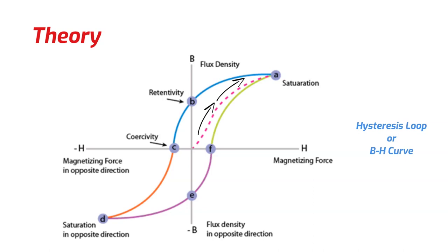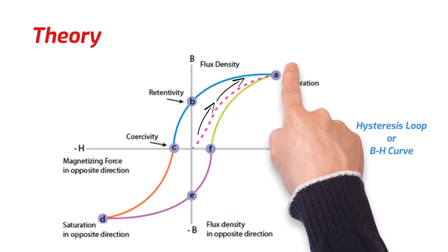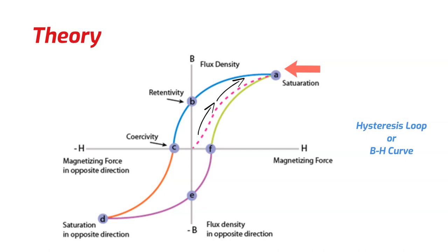Eventually, all the domains will get aligned with the increment in the applied magnetic field. And it will come to a saturation point where further increment in the applied magnetic field will not make any change in the magnetic field inside the ferromagnet, which is shown by point A.